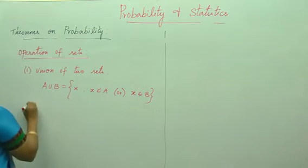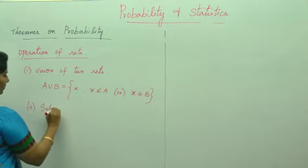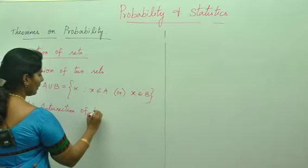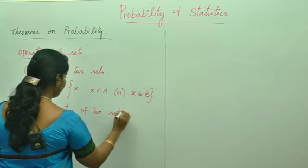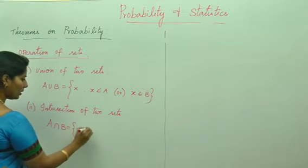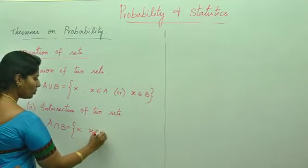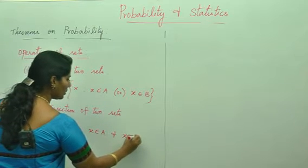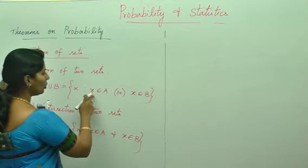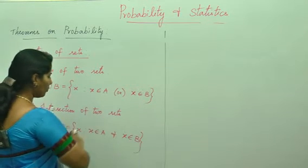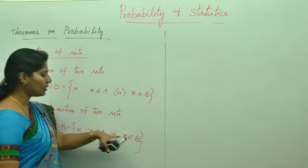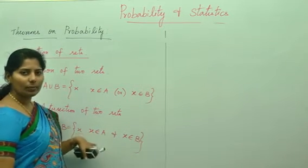The second one is intersection of two sets. A intersection B is the set of X such that X belongs to A and X belongs to B. You can see the difference between union and intersection: for union it is 'or' — this or that — but for intersection, both elements must be present, the elements in A as well as the elements in B.